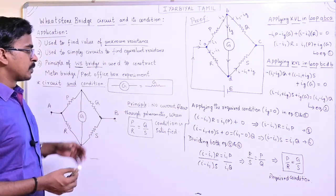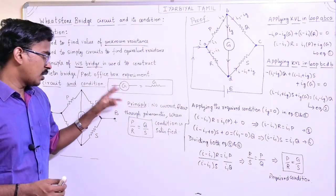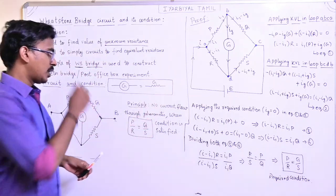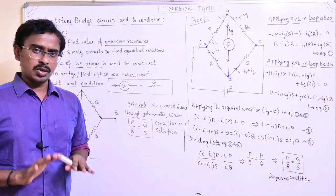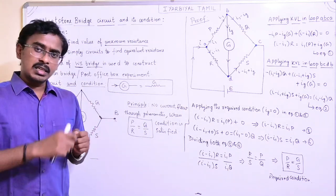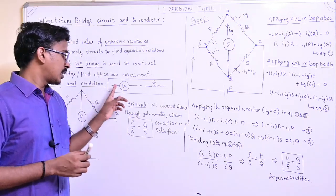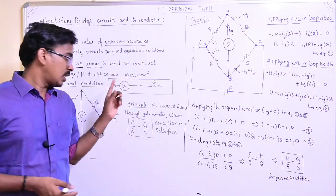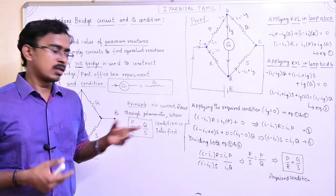The Wheatstone Bridge is important. Let's talk about the circuit and condition. This is the galvanometer. The galvanometer has a resistance. The galvanometer shows deflection — that is what we know. There are also turnings, meaning wire connected to wire.